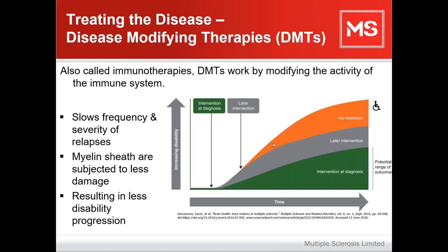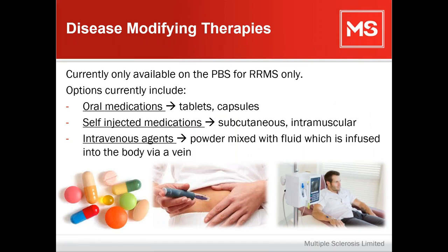Those who don't go on disease modifying therapy at all are perceived to potentially have a worse outcome. Disease modifying therapies are currently only available on the PBS — the Pharmaceutical Benefits Scheme — for relapsing remitting MS only. Current medications include oral medications (tablets or capsules), self-injected medications (subcutaneous or intramuscular), and intravenous agents infused into the body via a vein.